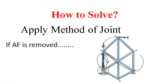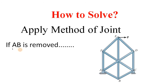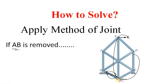The second option is member AB. If AB is removed or relocated, again there is no member there, and if you apply a load at point B, this whole part will be squeezed and will collapse to the side.